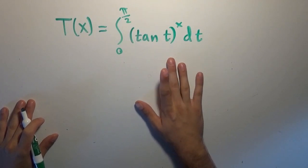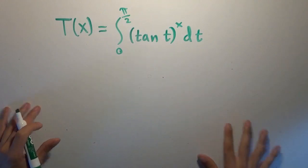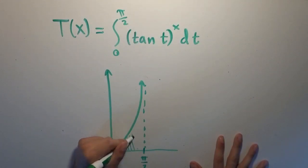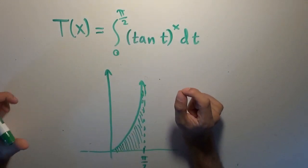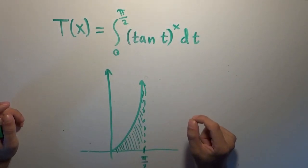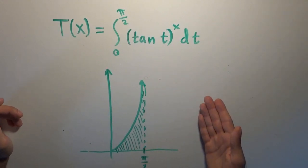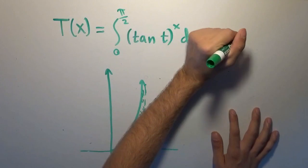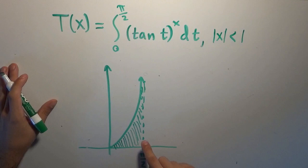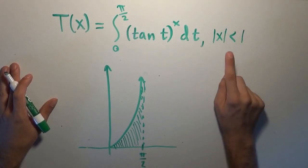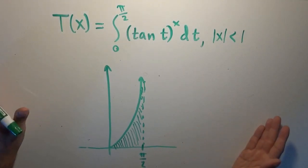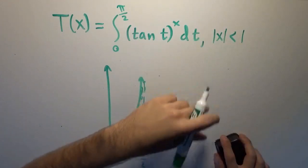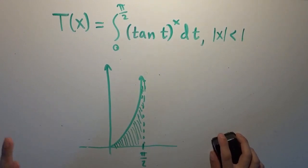This has a very nice closed-form expression, but we have to be careful. Taking the integral from 0 to pi over 2 of the tangent function when x equals 1, the area is infinitely large. For x less than 1 the area is finite, and for x greater than 1 it grows without bound. So this function will have a restricted domain of |x| < 1. I imagine that for complex numbers this would simply be confined to within the unit circle on the complex plane.